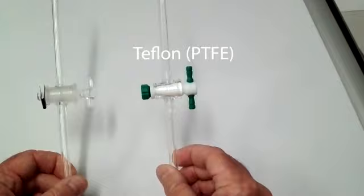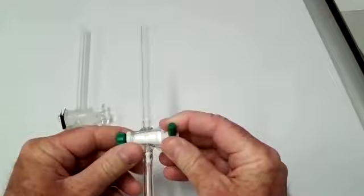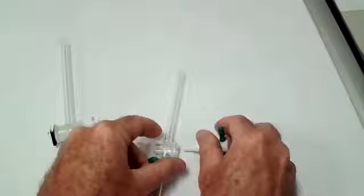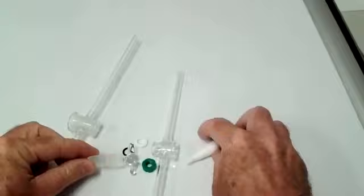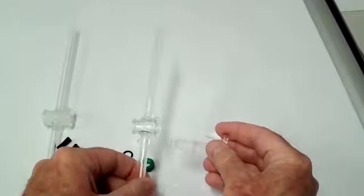The two main types of stopcocks are Teflon and glass. That refers to the material that the plug is made from. The plugs are not interchangeable between the two because of the taper of the plug as it meets with the barrel.